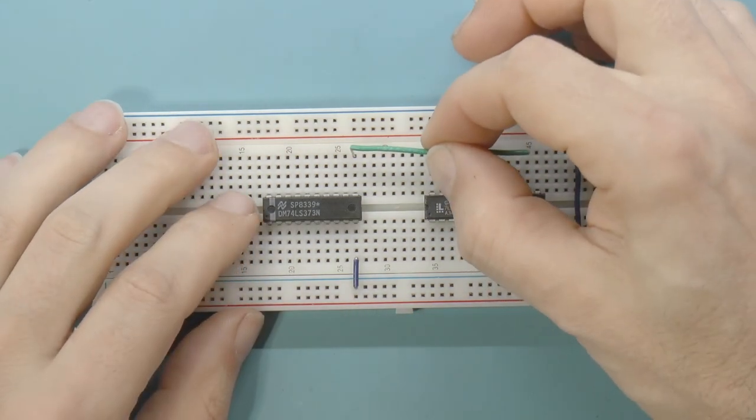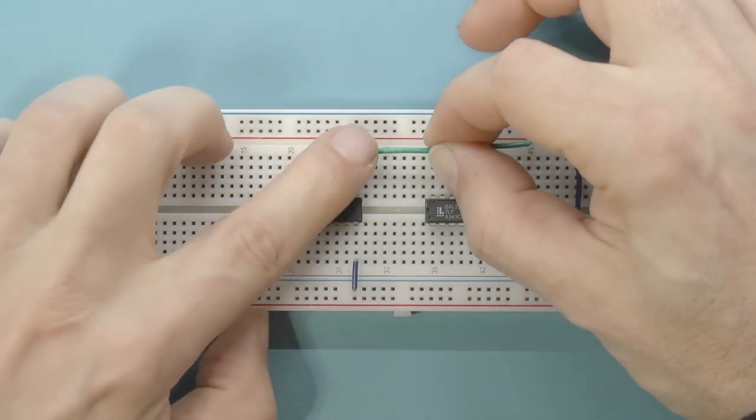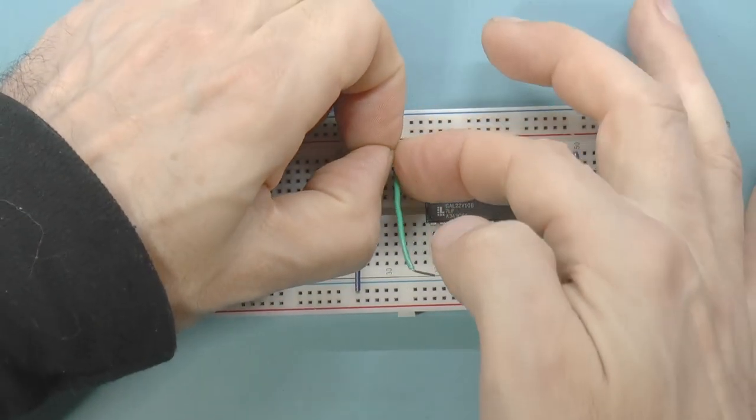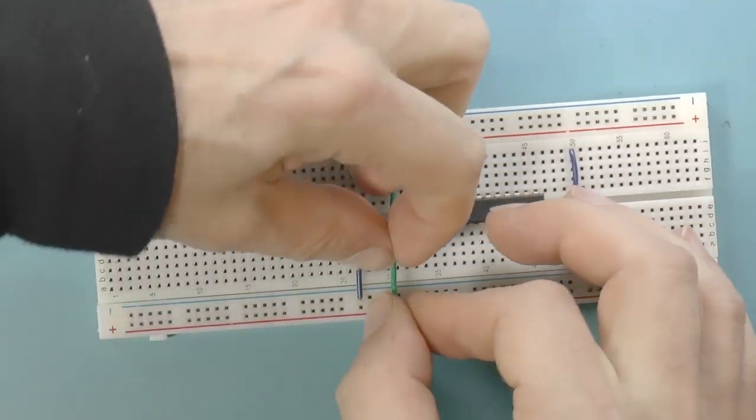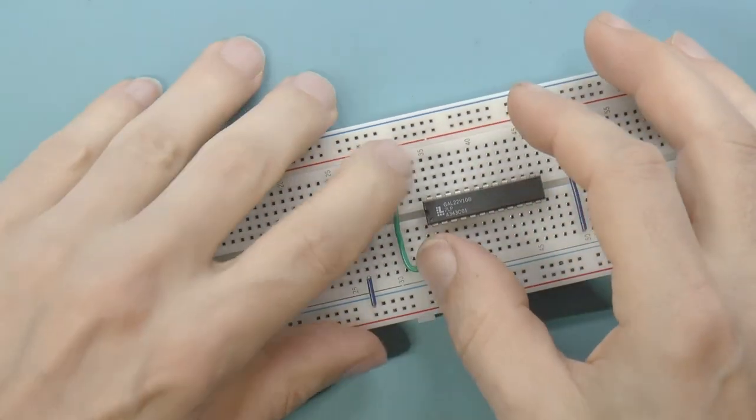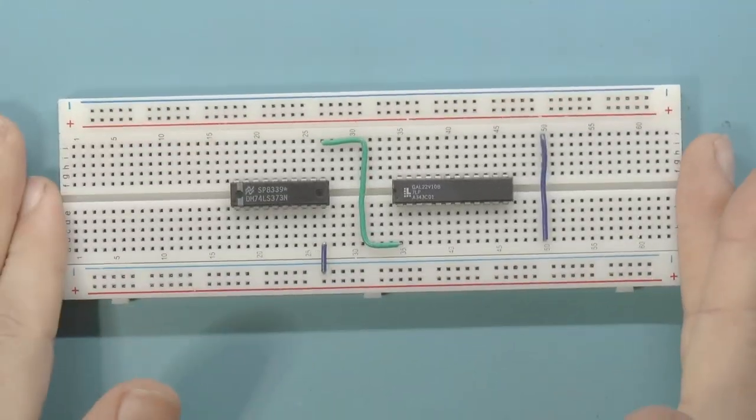So we want to go from here down to here. So I'm going to put the wire in, and then I'm going to make a nice sharp bend. And I'm going to make another nice sharp bend. And there we go. A perfect jumper.